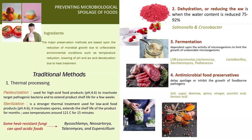The question is: how to prevent microbiological spoilage of foods? The major preservation methods are based on the reduction of microbial growth due to unfavorable environmental conditions such as temperature reduction, lowering of pH, and water activity, as well as denaturation due to heat treatment. However, due to consumer pressure, the trend in recent years has been to use less severe minor preservation methods and modified atmosphere packaging.